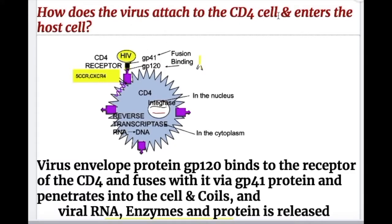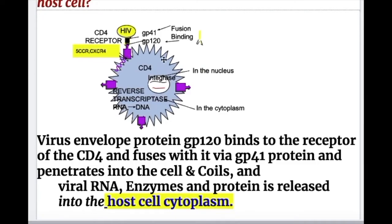The virus envelope protein GP120 binds to receptors on the CD4 cell and fuses with it via the GP41 protein, then penetrates into the cell and coils. Viral RNA, enzymes, and proteins are released into the host cell cytoplasm.